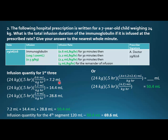Since mls is what I'm looking for, I need my conversion factor of mls over kilograms per hour. As mentioned, we have that strange compound denominator, so we multiply by kilograms and by hours. Doing this three times gives us 50.4mls used so far. Since the total is 120mls, the infusion quantity for the fourth segment is 120 minus 50.4, which equals 69.6mls.